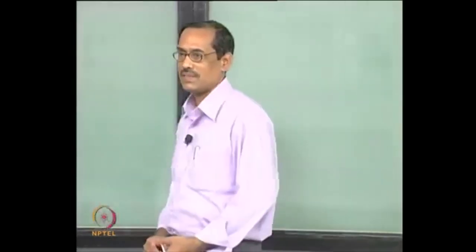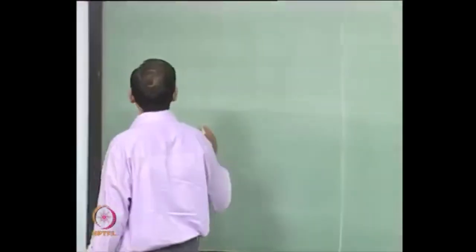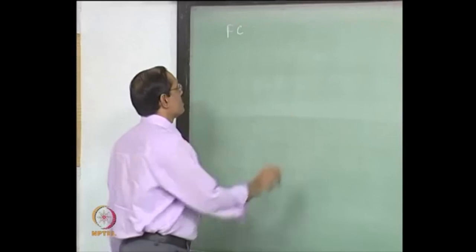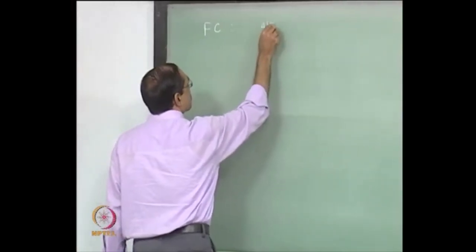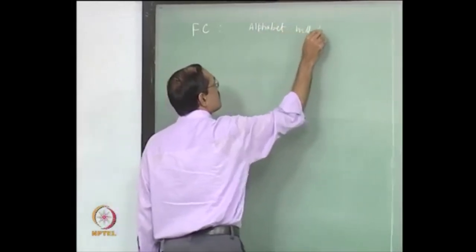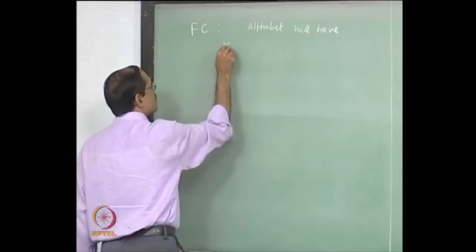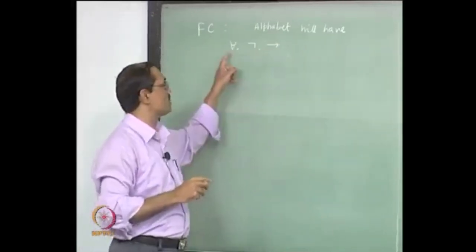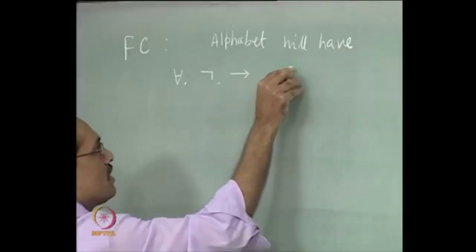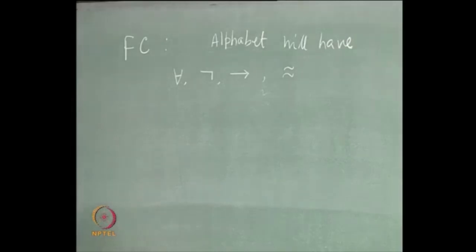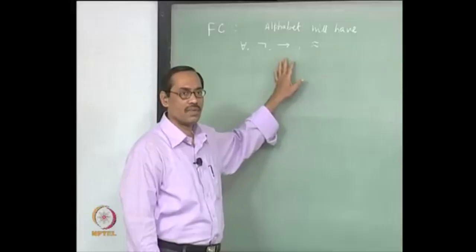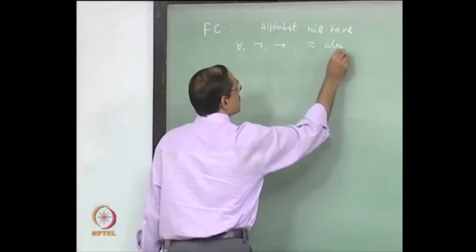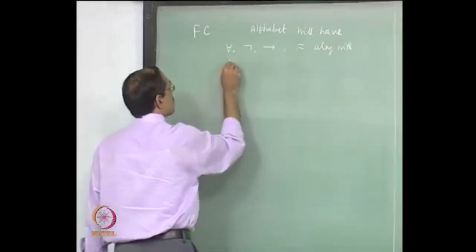These are the extra things we need for FC. Let us start with FC. Our axioms will be axiom schemes. We are not using the existential symbol. We have the alphabet with only these symbols: for each, not, and implies. These two are the connectives and this is the only quantifier. We will also use the equality predicates. All the other things like predicates, terms, variables, they are as they are.